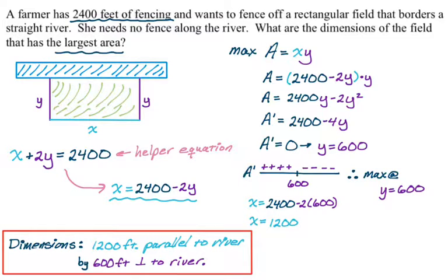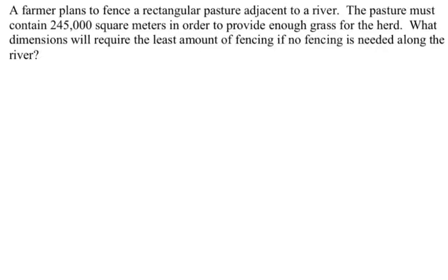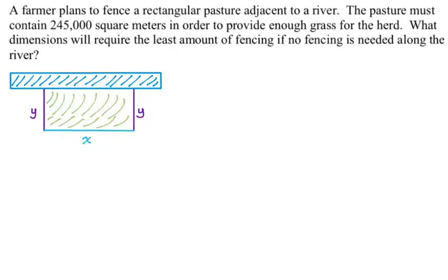Let's solve another one. This is almost the same problem but flipped. A farmer plans to fence a rectangular pasture adjacent to a river. The pasture must contain 245,000 square meters to provide enough grass for the herd. What dimensions require the least fencing if none is needed along the river? Instead of knowing how much fence we have and optimizing area, we now know the area and optimize the amount of fence. Same picture. The helper equation is x times y equals 245,000.